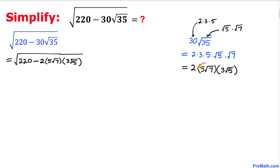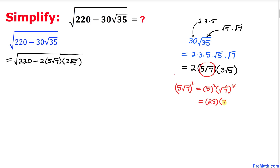Now let's focus on 5 times square root of 7. Let me write down 5 times square root of 5 times square root of 7, and take the square of this one. That gives us 5 squared times square root of 7, all squared. 5 squared is 25, and the square and square root undo each other, times 7. So 25 times 7 equals 175.